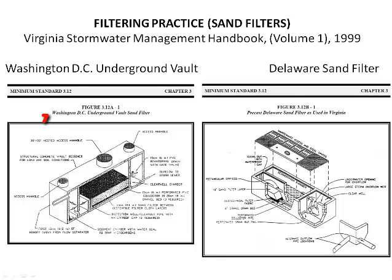Underground sand filters, like the Washington D.C. underground vault sand filters and the Delaware sand filter systems, also have the above features, with the exception that they have underground internal flow splitters and overflow devices that bypass runoff from larger stormwater events around the filter. The drainage area served by one vault filter should be limited to 1.25 acres. Perimeter sand filters also have the basic design elements of a sediment chamber and filter beds; however, flow enters the system through slots or grates, as at the edge of a parking lot.